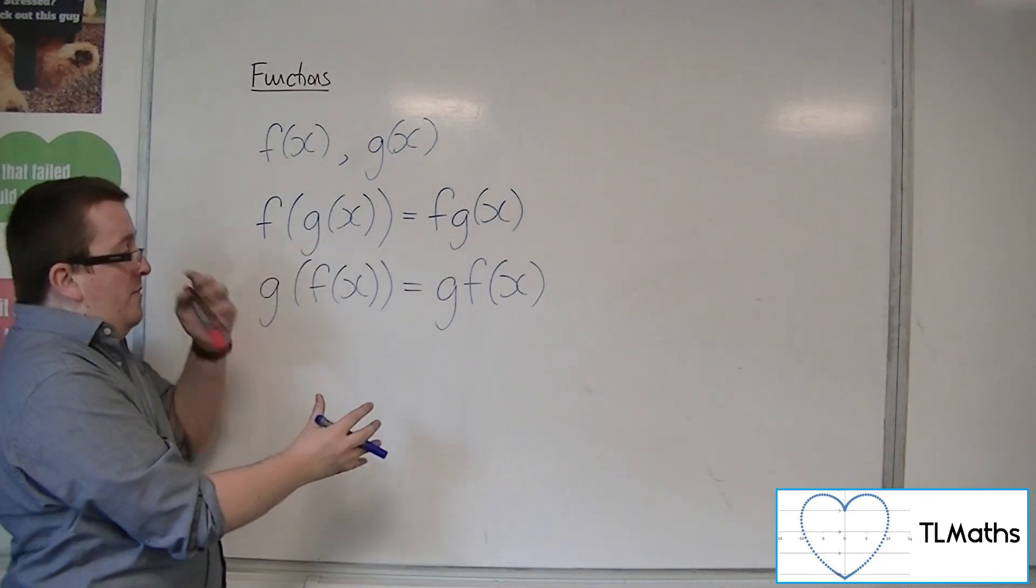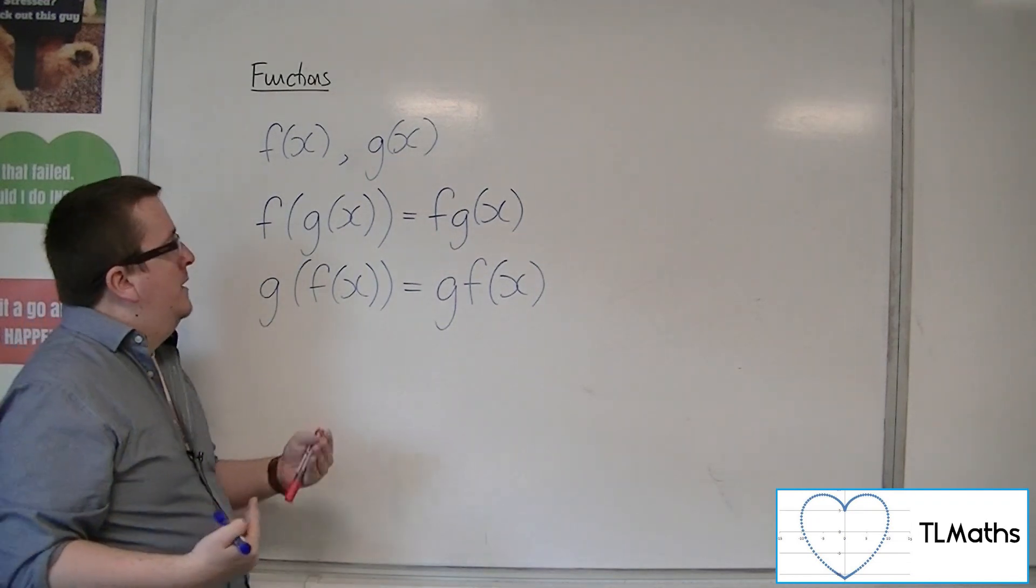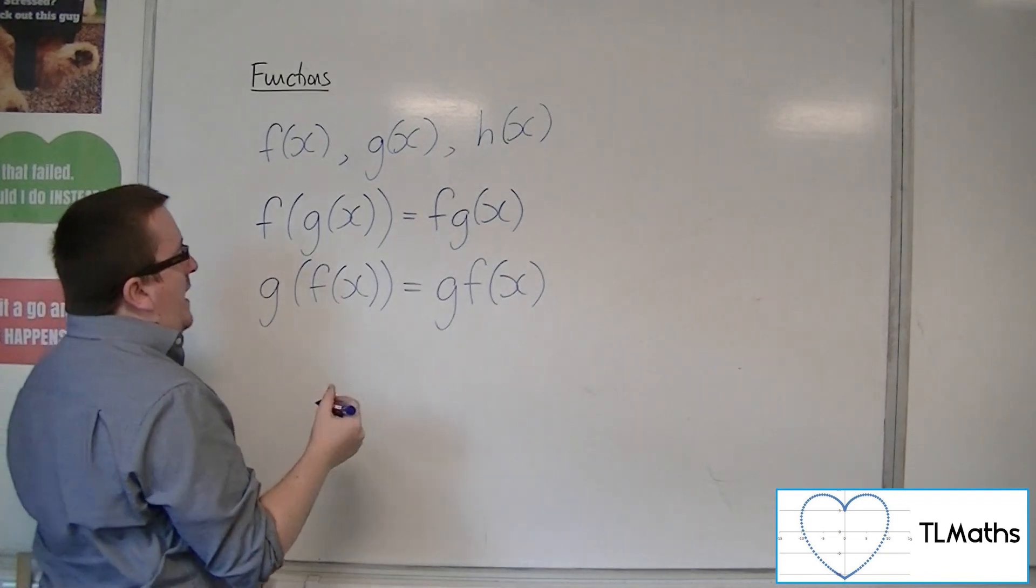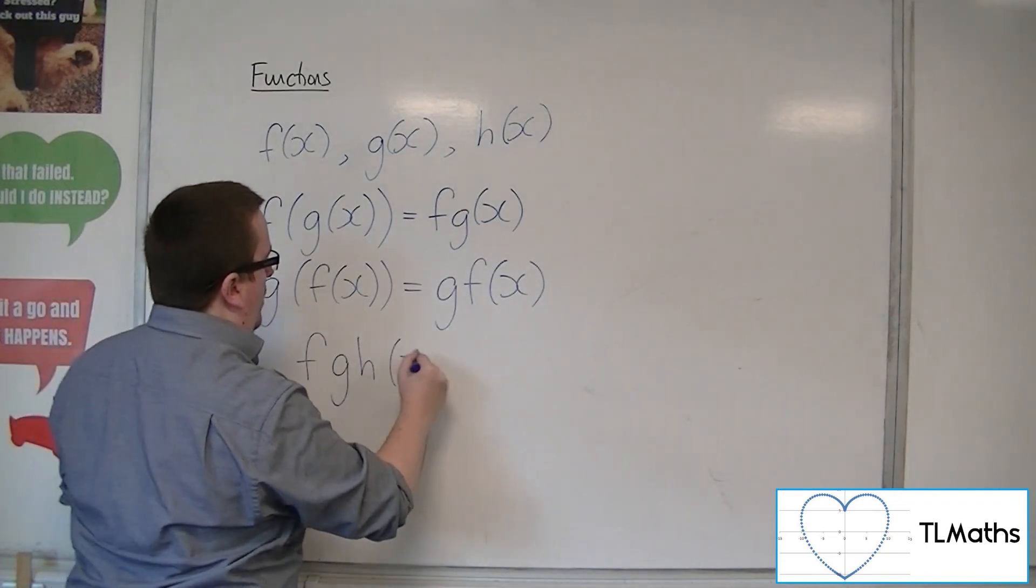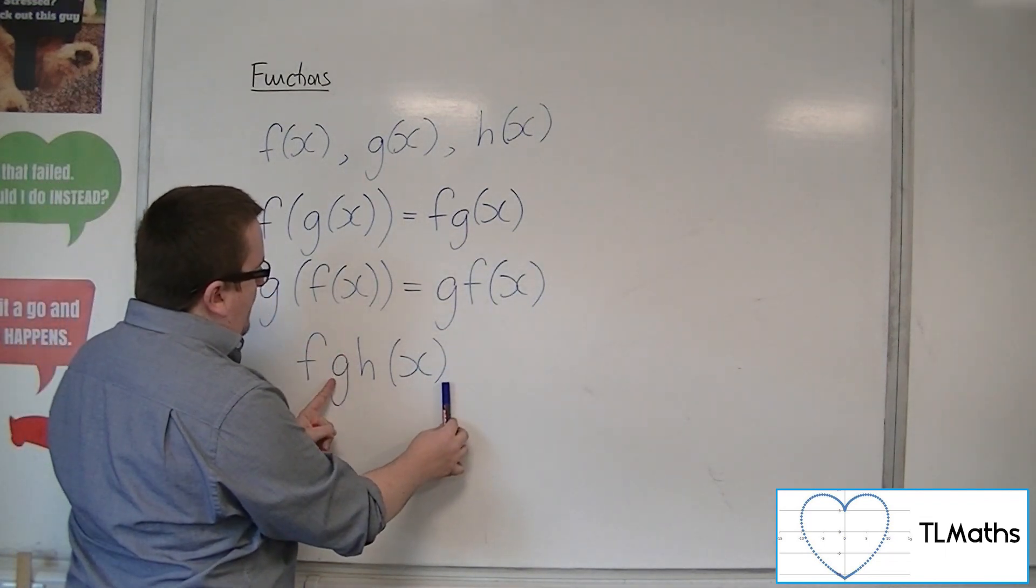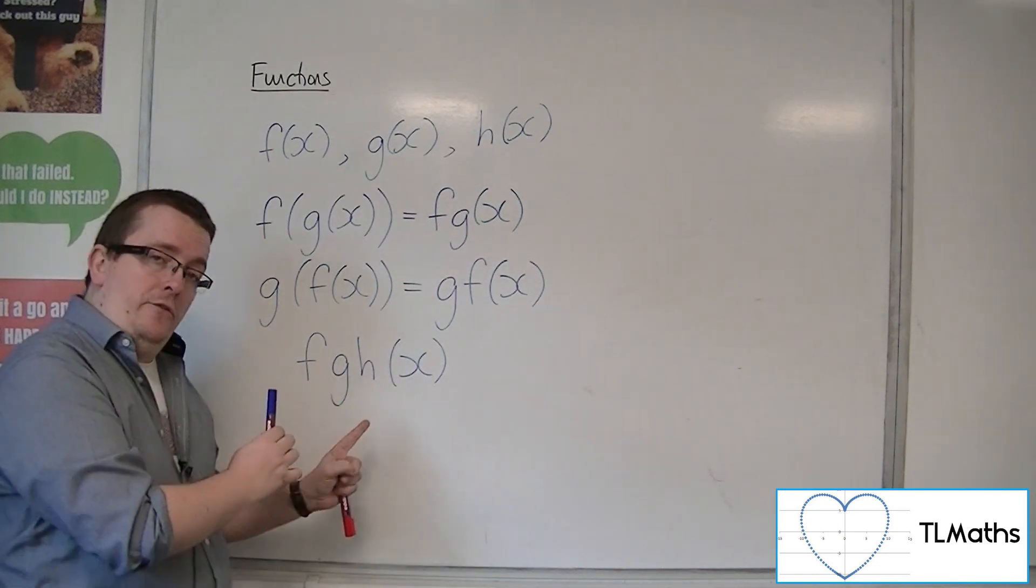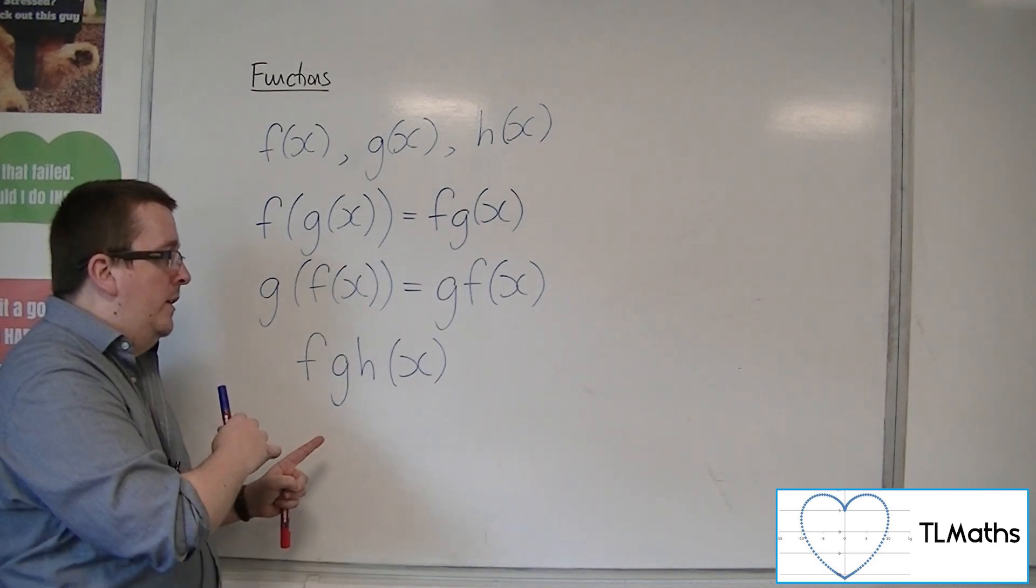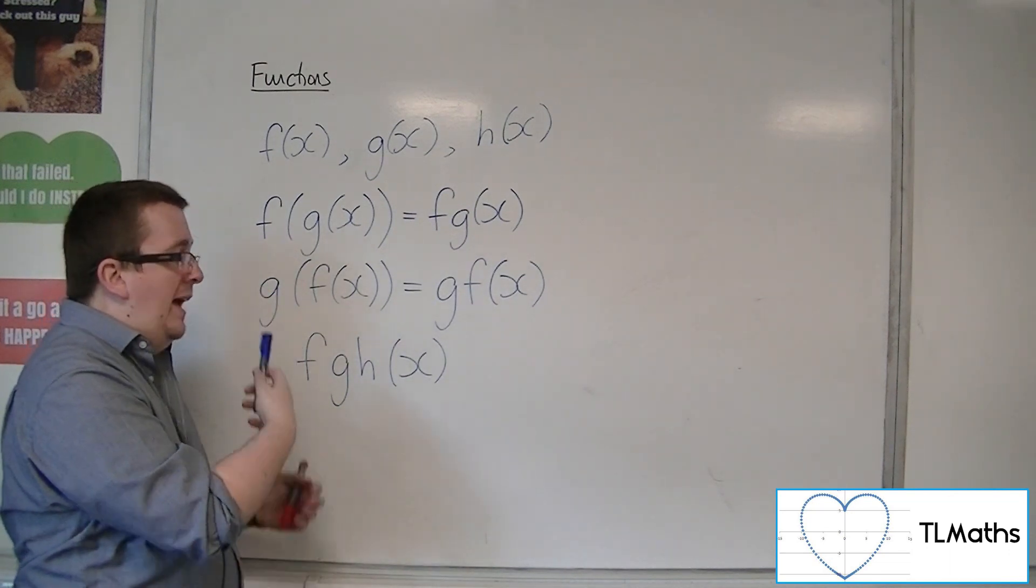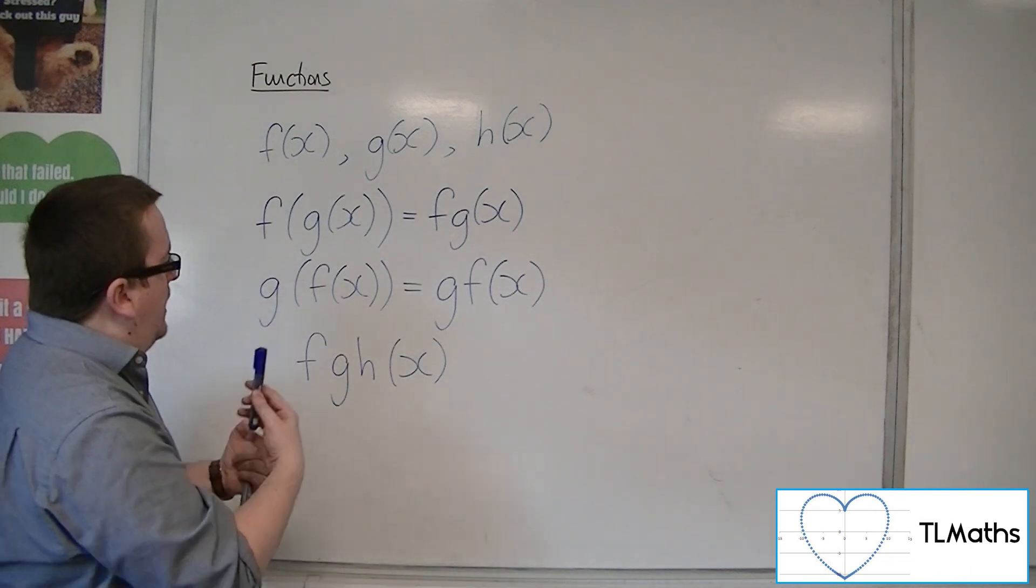Now, as you can see from this, the order is to work from right to left. So if I had another function, h of x, then if I had fgh of x, I need to know that h of x is going into g and then that is going into f. So you work from right to left along the letters. Those of you who've worked with matrices will recognize this as how you multiply matrices together.